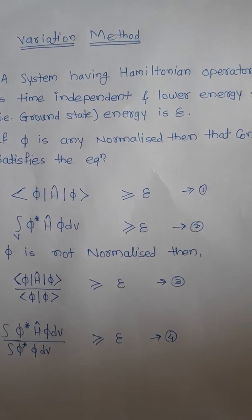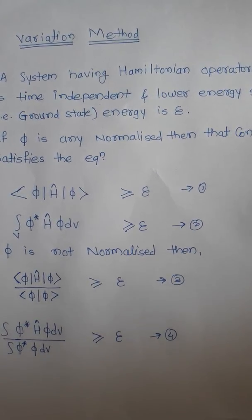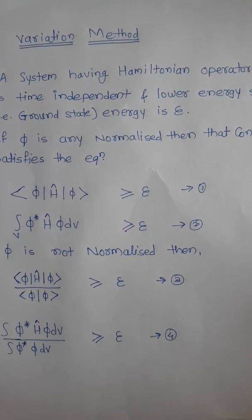is like this: suppose a system having Hamiltonian operator H is time independent and the lower energy state, that is ground state energy, is E. If Phi is any normalized function, then that condition satisfies